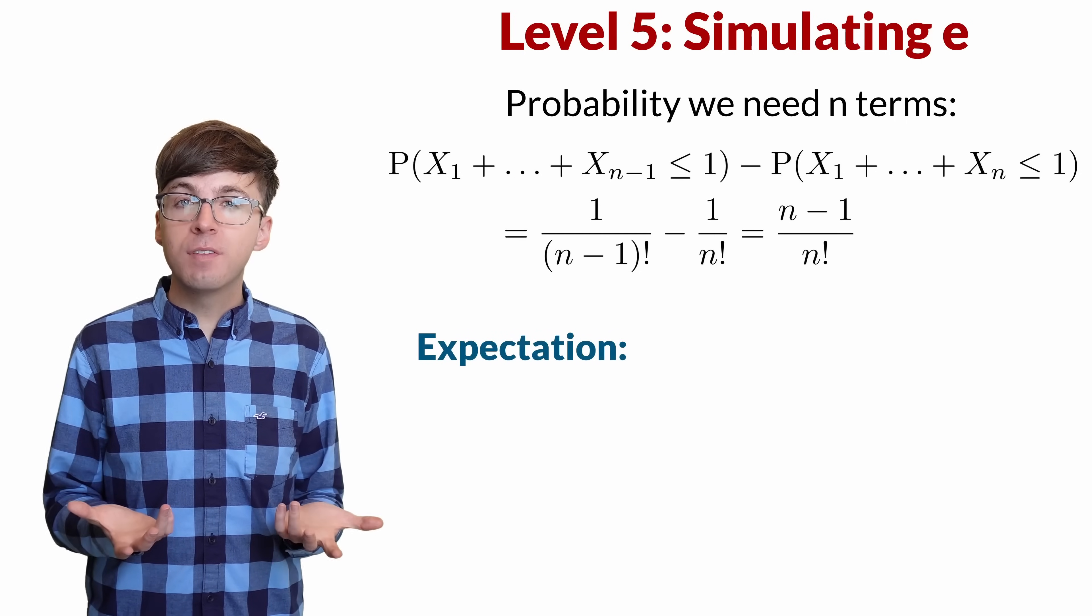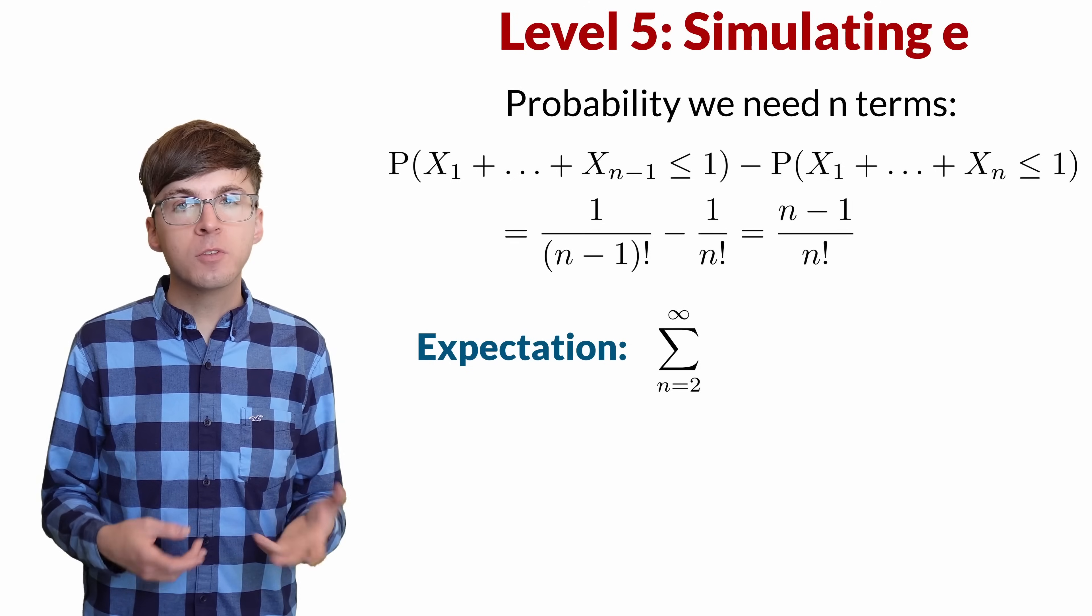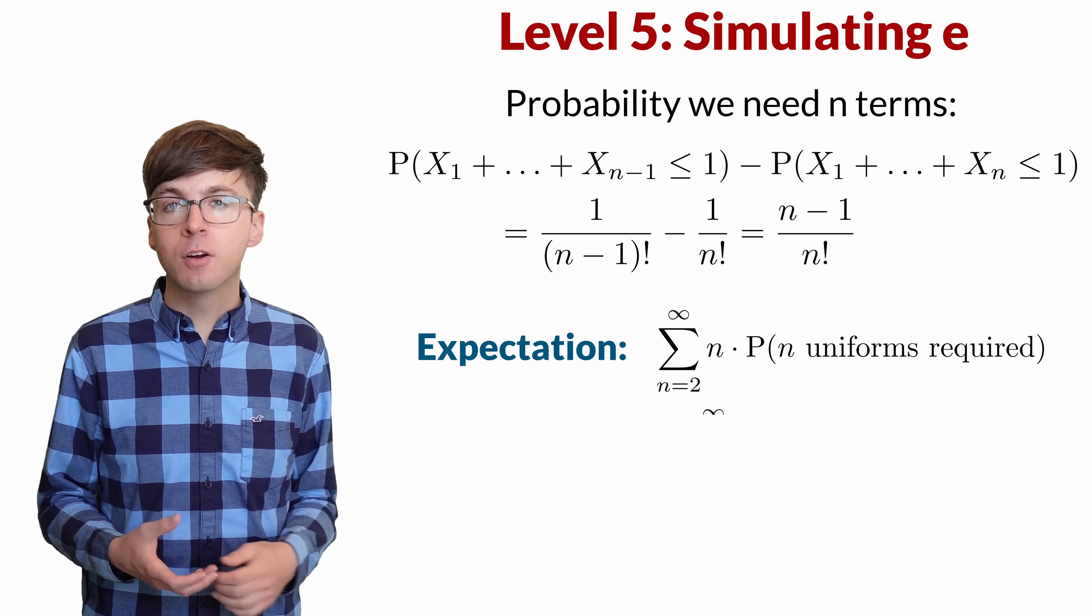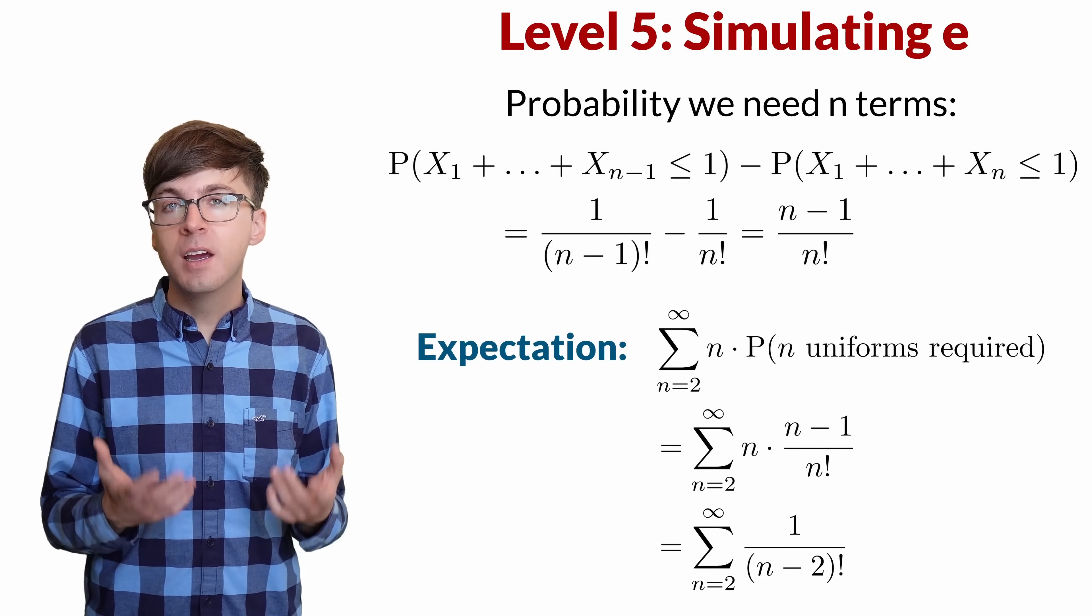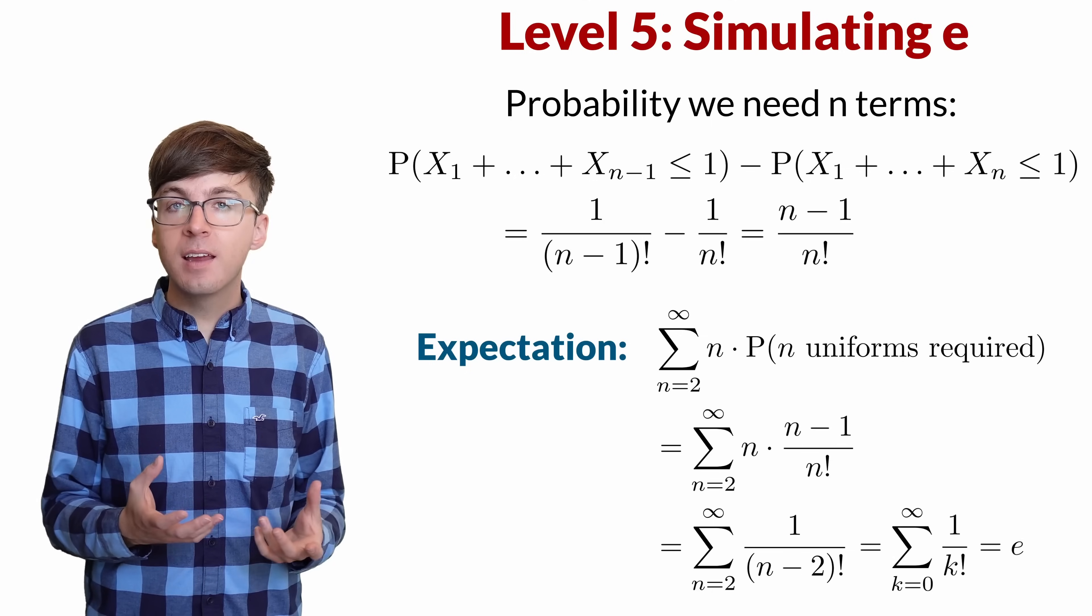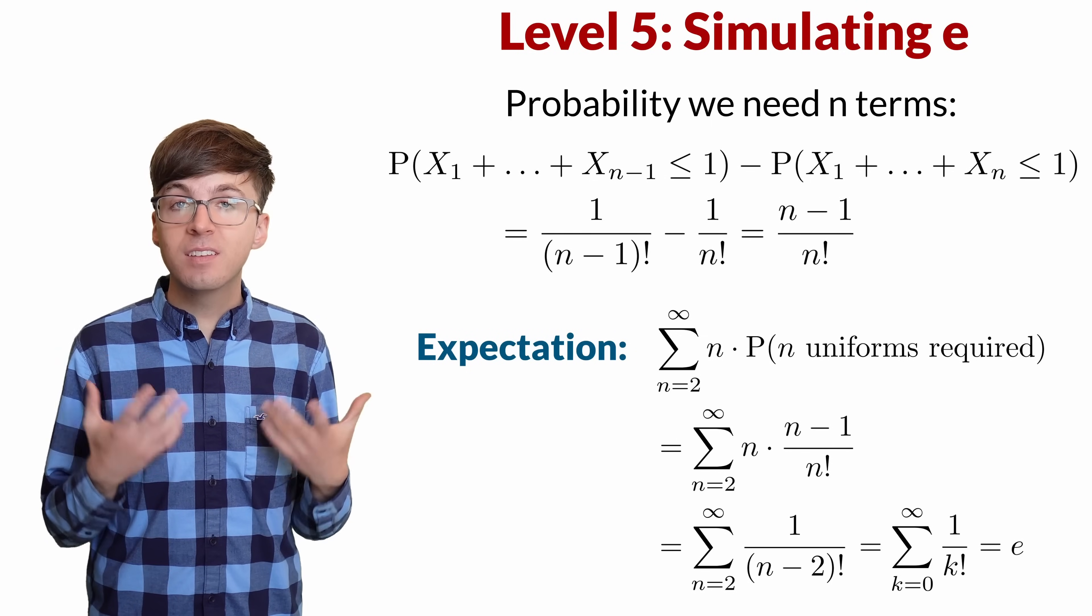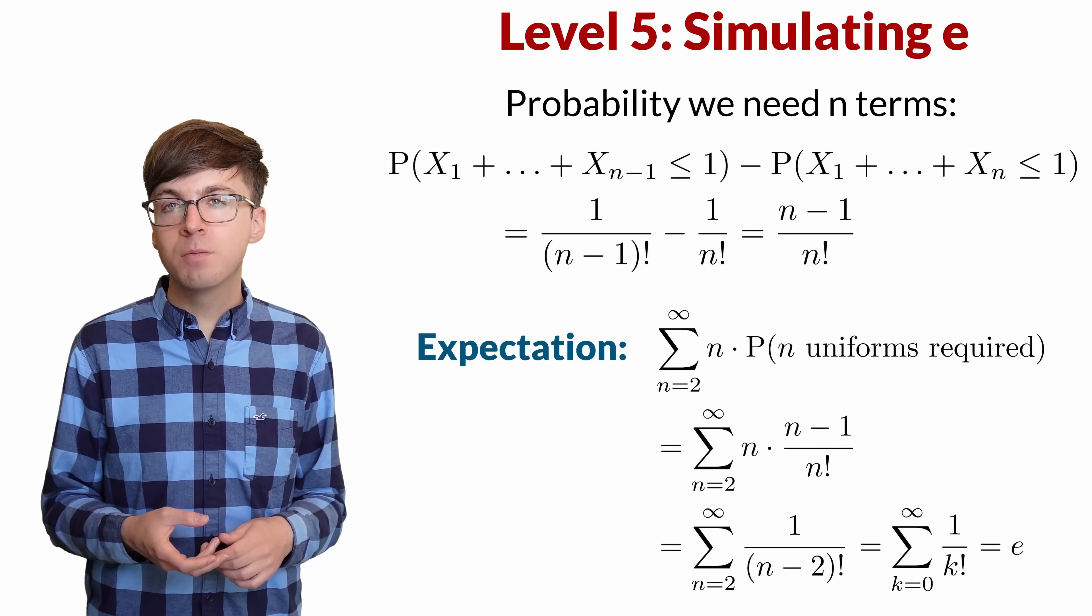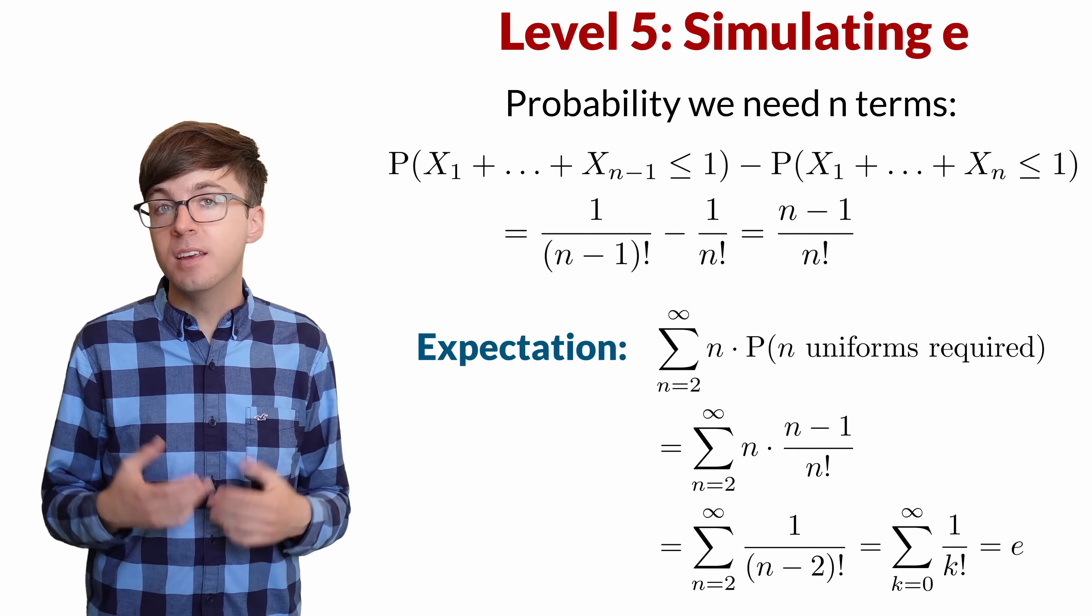Lastly, we find the expected value of the number of terms it takes. It takes at least two terms, so the sum starts at 2. We multiply each value by the probability of it occurring. After simplifying, we get the sum from 2 to infinity of 1 over n minus 2 factorial. We can re-index to get the sum from 0 to infinity of 1 over k factorial. This is e. So the expected number of independent uniform random variables we have to add up for the sum to be above 1 is equal to e.